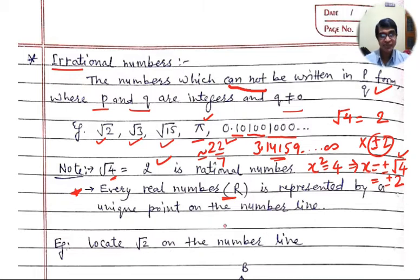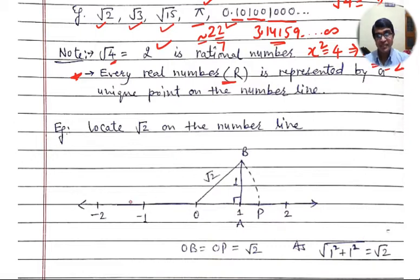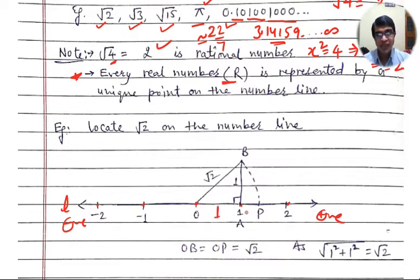Let us discuss how to locate root 2 on the number line. Draw a number line L with point 0, 1, 2, minus 1, minus 2 at equal distances, going to infinite on both sides — positive on the right, negative on the left. Now, draw 1 unit from O to point A (that is, 0 to 1). Then draw a perpendicular at point A, also of 1 unit length, and name that point B. So OA is 1 unit and AB is also 1 unit.